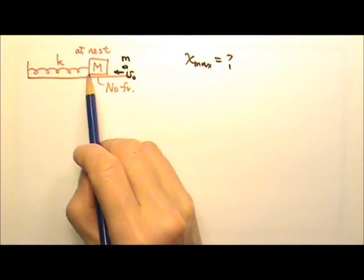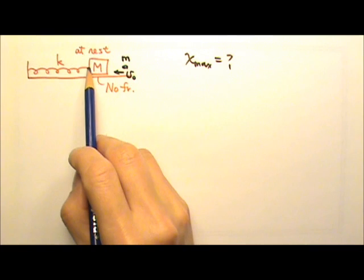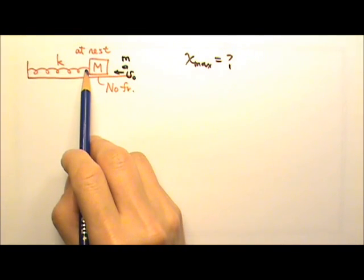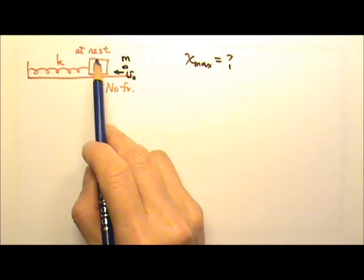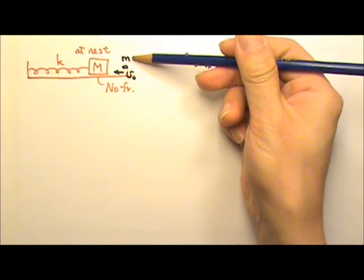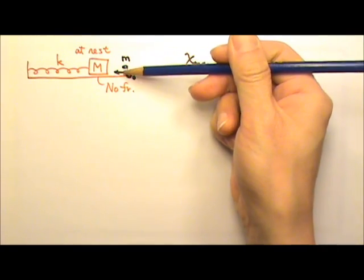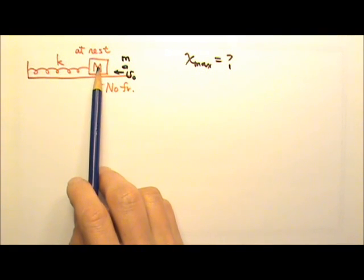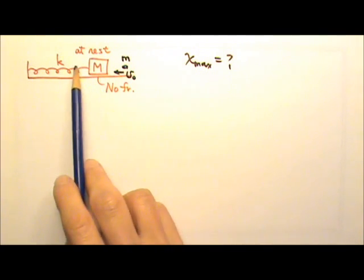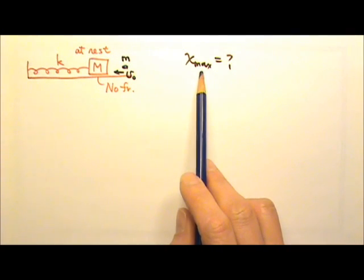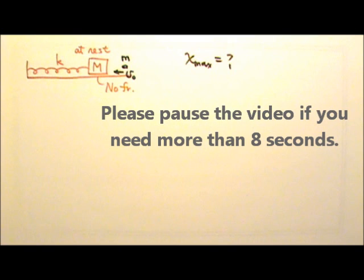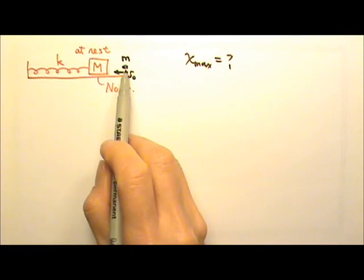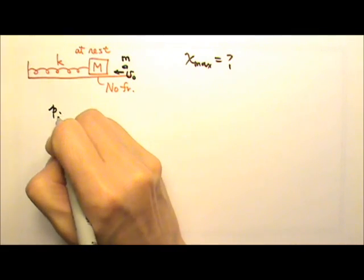In this problem, we have a box of mass big M with no friction, attached to a spring with constant k. Big M starts at rest, and a bullet with mass little m traveling at speed v₀ is shot into the block. The bullet becomes embedded, and the bullet-block combination starts to oscillate. We are looking for the amplitude of the oscillation. This is first a collision problem, so we use conservation of momentum.